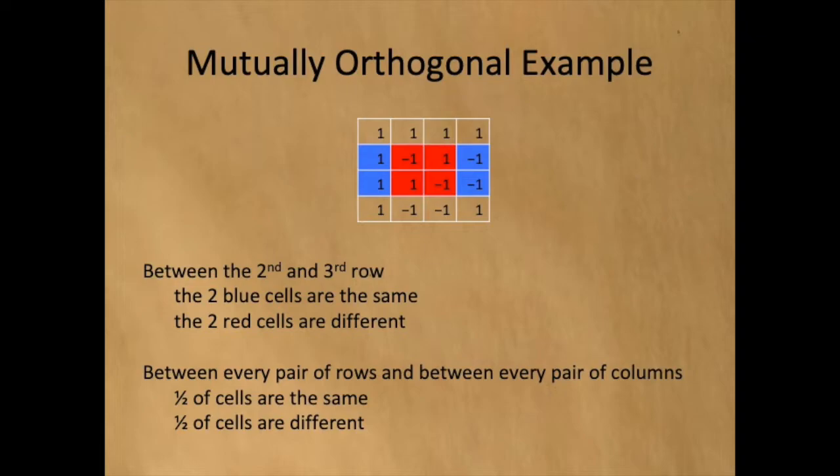Here's an example of mutually orthogonal rows and columns. We compare the second and third rows of this Hadamard matrix. In the cells marked with blue, the values are equal, and in the cells marked with red, the values are different.